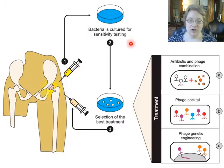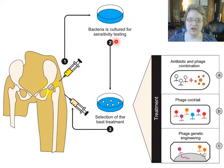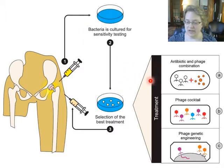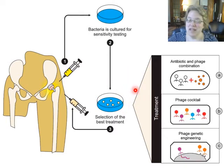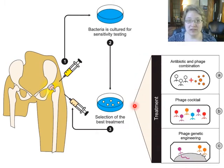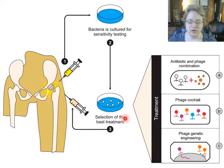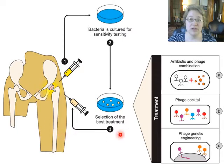Ideally, you would do this targeted to each individual. The first step would be to get a sample of the actual bacteria causing the infection and test it for sensitivity to antibiotics or a phage cocktail. After checking which would work best, you pick the best treatment for that specific strain infecting that person. Really specialized and personalized medicine is where we should be going for the best outcomes. This is not cheap and not fast, so we will see.